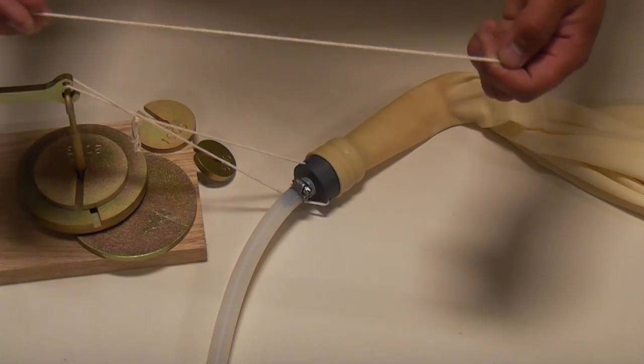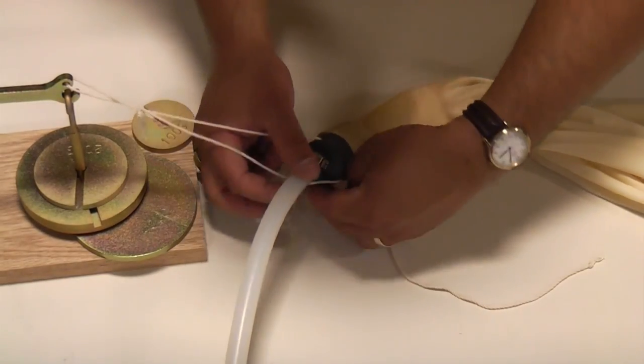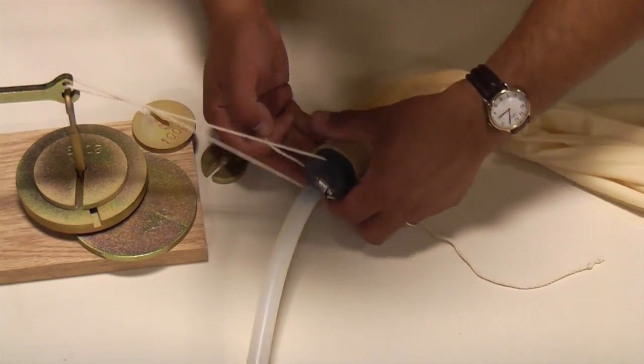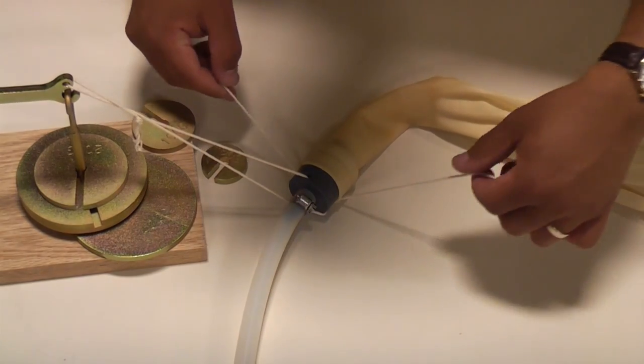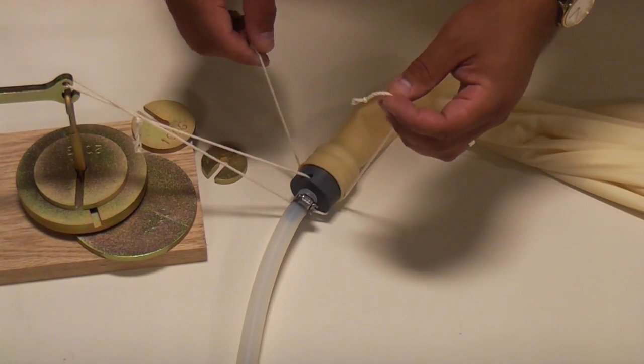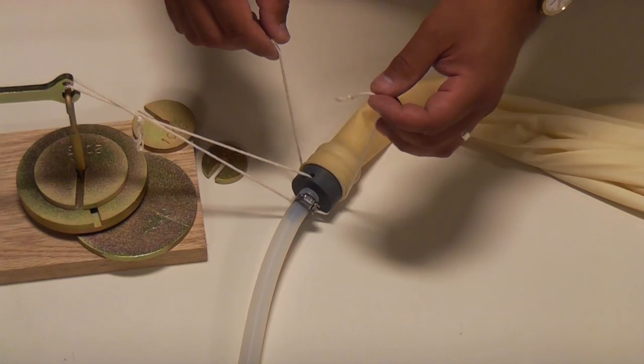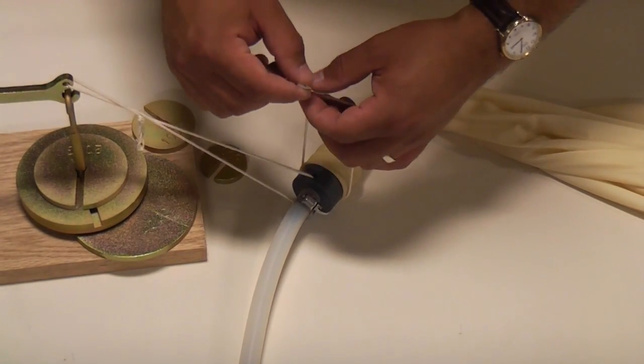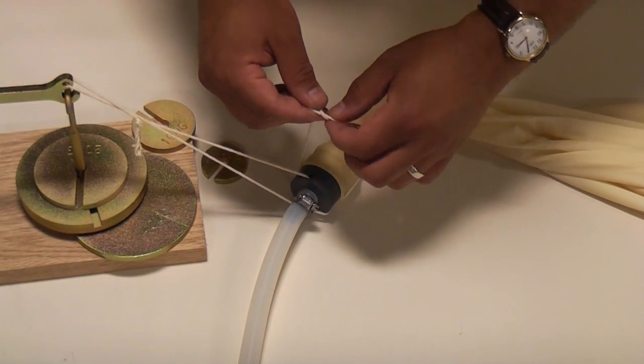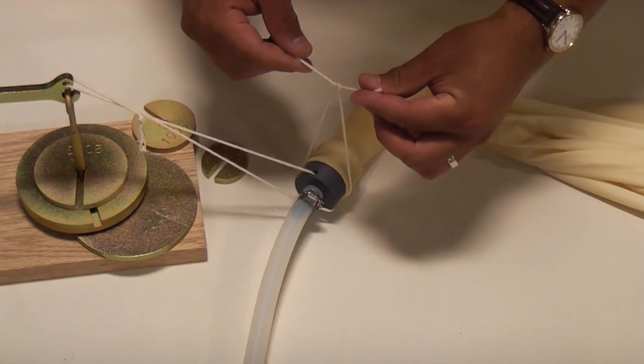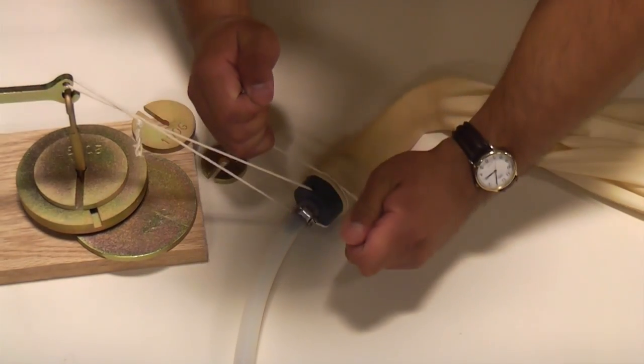Then I'm going to take the string, and I'm going to go around the nozzle and the neck of the balloon in that bottom groove, and I'm going to tie the string just like I would tying my shoes. I'm going to make an X, go over, around, and under, and pull tight.